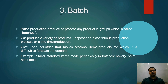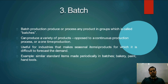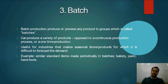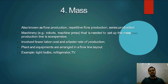Next is batch production. An example of batch production is a bakery. In this case, one type of batch — like biscuits — is produced at a time. Batch production means homogeneous production is done in small batches. Different batches can have different sizes and shapes.